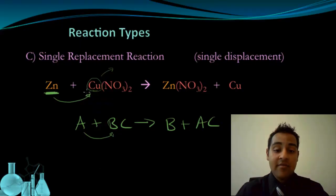We could also have the A replacing the C. A plus BC gives C, because the A is going to replace, in this case, the anion. So we have C by itself with BA. So either one of those two cases could happen.